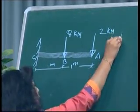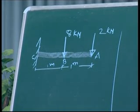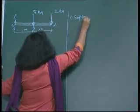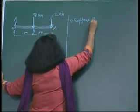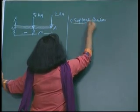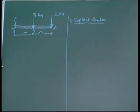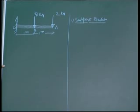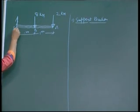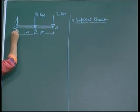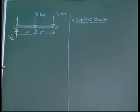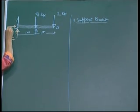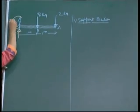The very first step is we have to calculate the support reactions. To calculate the support reactions, we have to apply the conditions of equilibrium: sigma H = 0, sigma V = 0, and sigma moment = 0. We can see that we have a fixed support, and for a fixed support, we have three types of reactions: a vertical reaction VC, a horizontal reaction HC, and a moment MC.